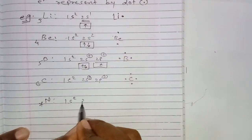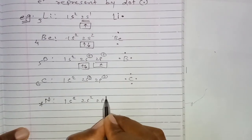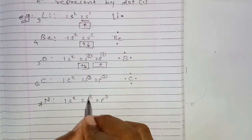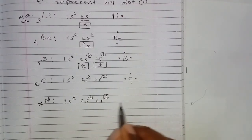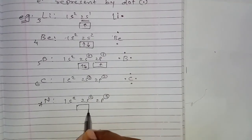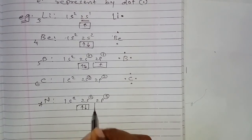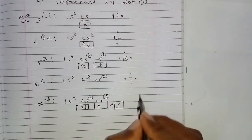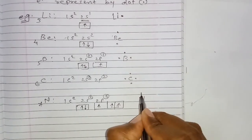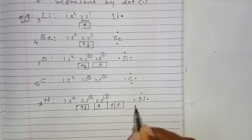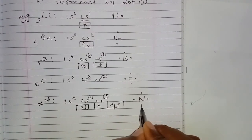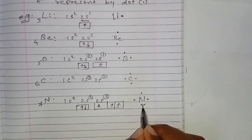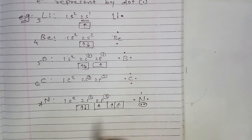Nitrogen has configuration 1s² 2s² 2p³, giving five electrons in the outermost shell — three single (unpaired) electrons and two paired electrons.